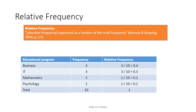Another type of frequency that we can employ already at a nominal variable is known as relative frequency. It's defined as the absolute frequency expressed as a fraction of the total frequency. For example, back to our educational program, we saw that we had four students who are doing business. And we have a total of 10, which gives us 4 divided by 10, a relative frequency of 0.4. So in general, you can say that the relative frequency is the frequency divided by the total.